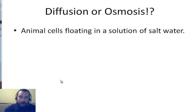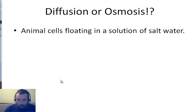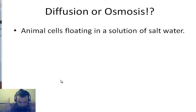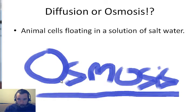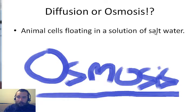Here is your first scenario: animal cells floating in a solution of salt water. What will happen — diffusion or osmosis? That's right, it's going to be osmosis because salt cannot go through the cell membrane.